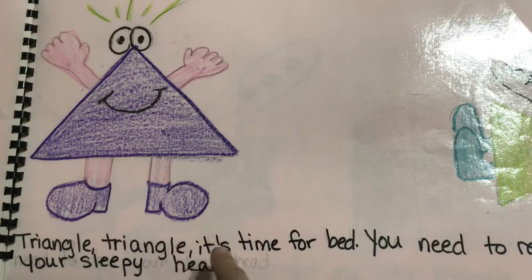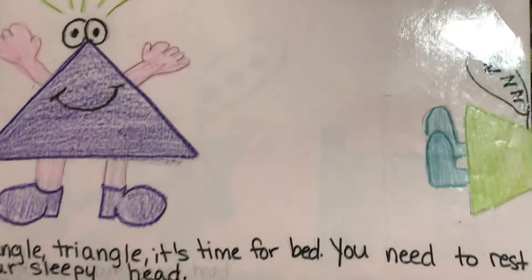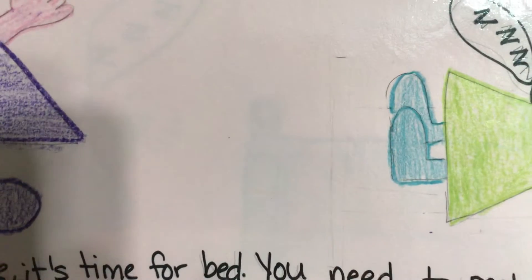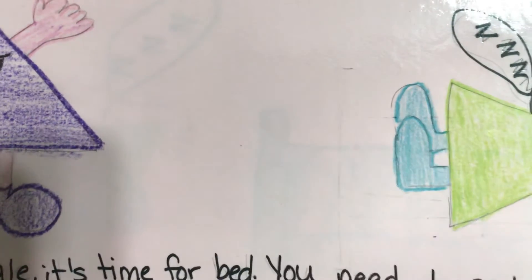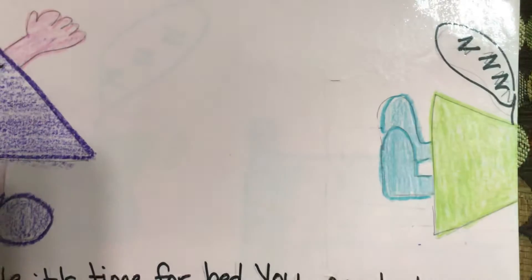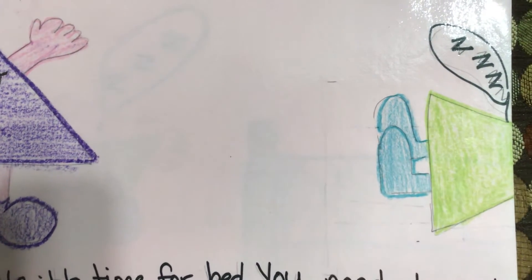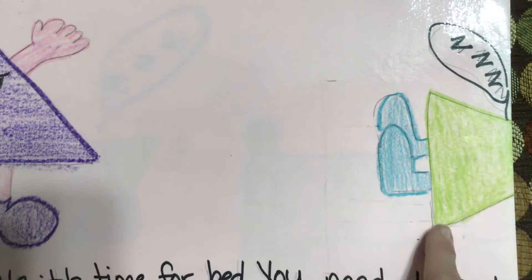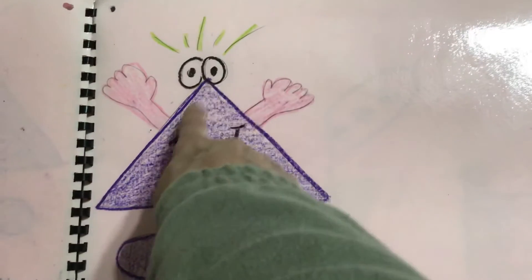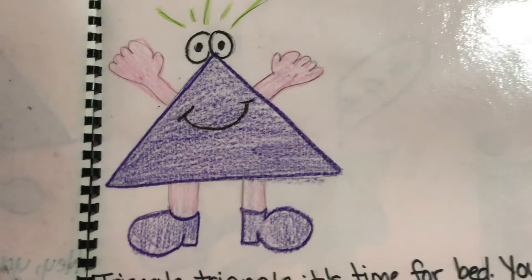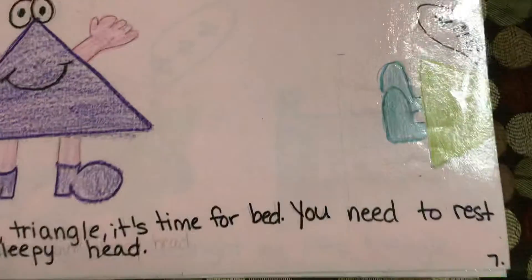Triangle, triangle, it's time for bed. You need to rest your sleepy head. Could this be her triangle? We only see half of it, but how many sides do you see? One, two, three. How many corners? One, two. Could it be a triangle? How many sides does a triangle have? One, two, three. How many corners does a triangle have? One, two, three. Do you think this is a triangle?